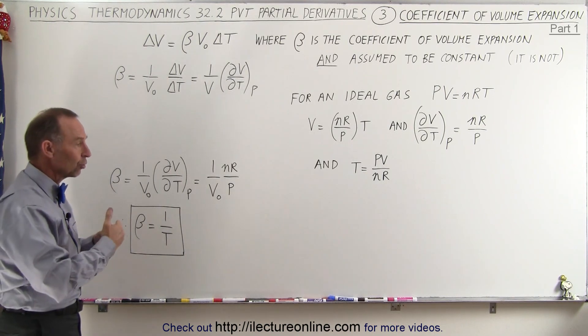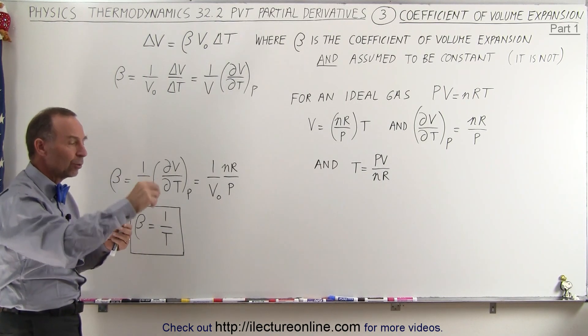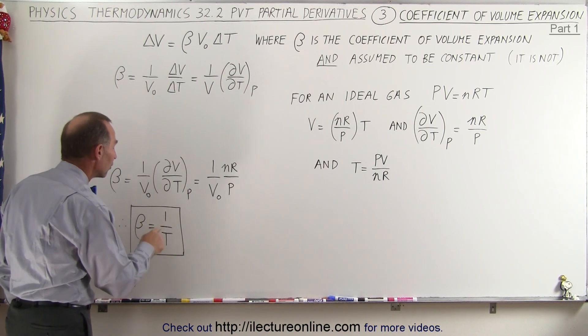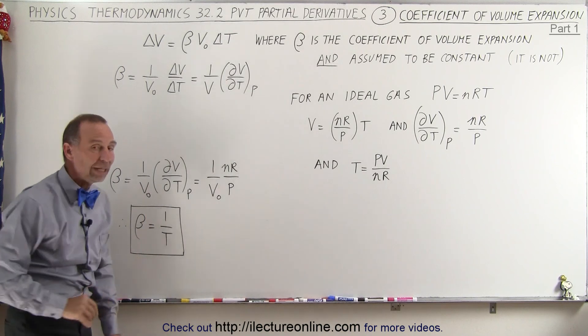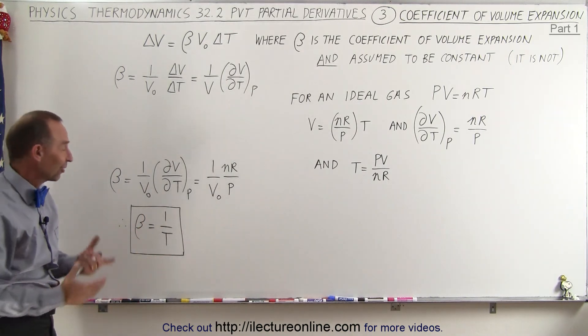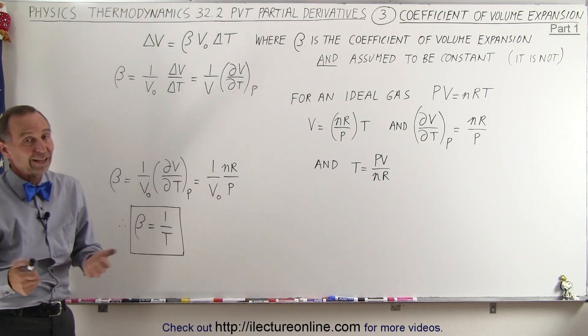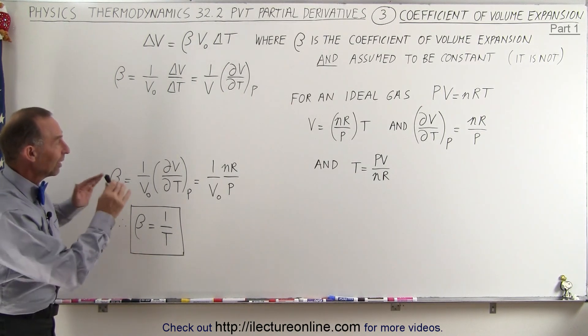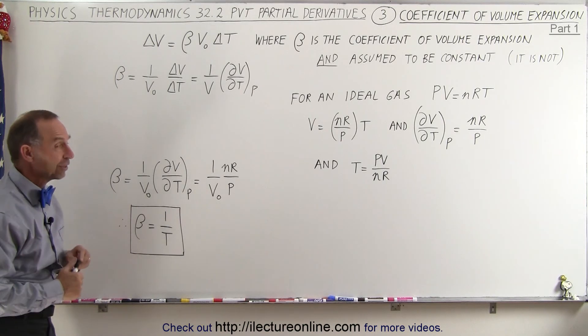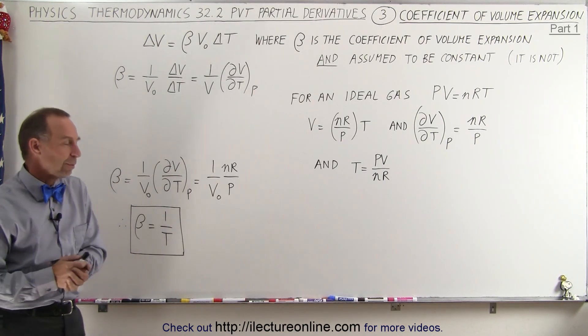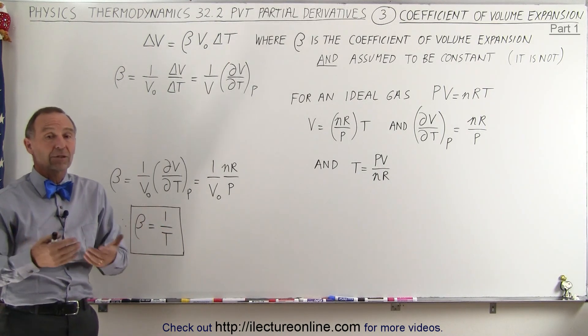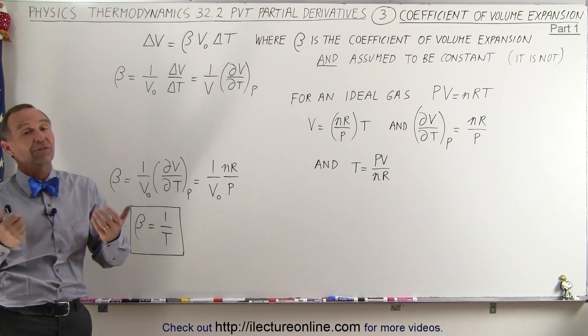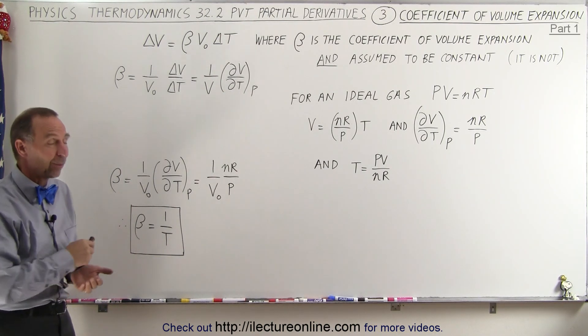So you can see it's not constant at all. It continuously changes, it's continuously a function of the temperature, or I should say a function of the inverse of the temperature. Therefore don't assume it's constant. When we look at the details it definitely is not. And if you look up the coefficient of volume expansion in a typical book like the CRC, you'll find that it gives you values for a whole array of temperatures because it does depend on the temperature, and that's why we know.